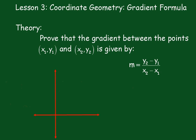Lesson 3: Coordinate Geometry Gradient Formula. Theory: Prove that the gradient between the points (x₁, y₁) and (x₂, y₂) is given by m equals y₂ minus y₁ over x₂ minus x₁. To do this, we'll need to plot a couple of points.